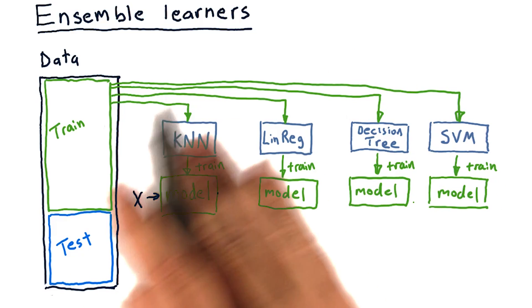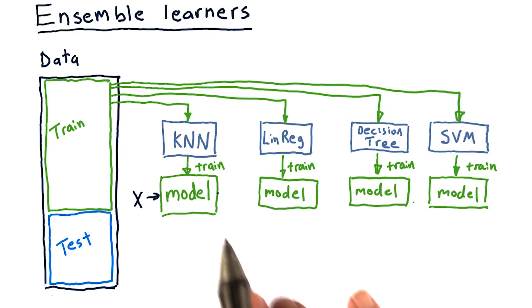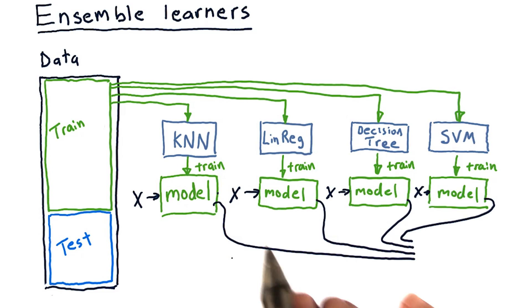To query this ensemble of learners, we query each model by itself and combine the answers. So if we wanted to query this model with X, we plug X into each model, the same X, and then our Ys come out. We have a Y output from each of these models. How do we combine them?